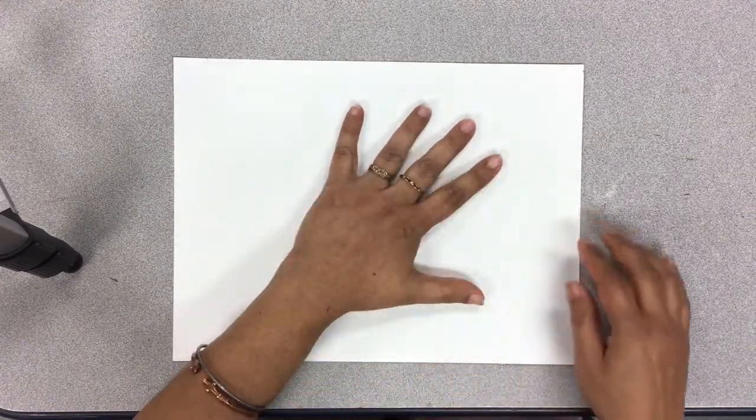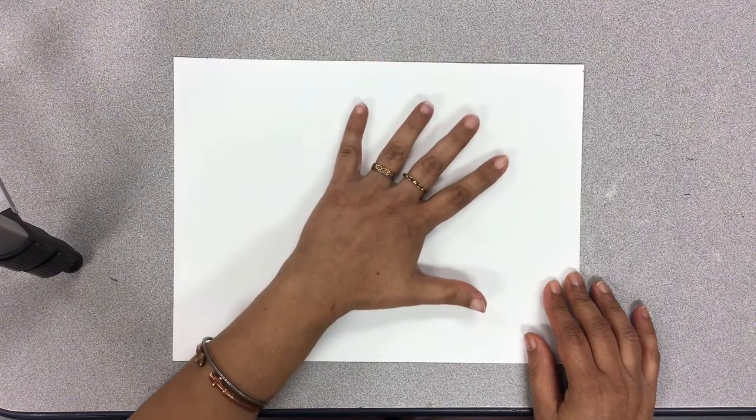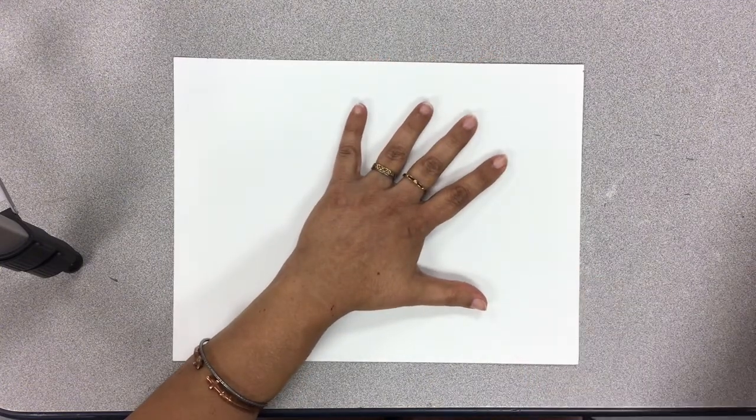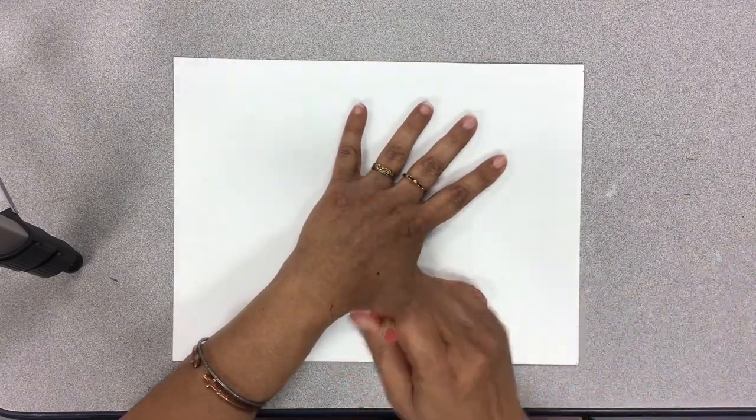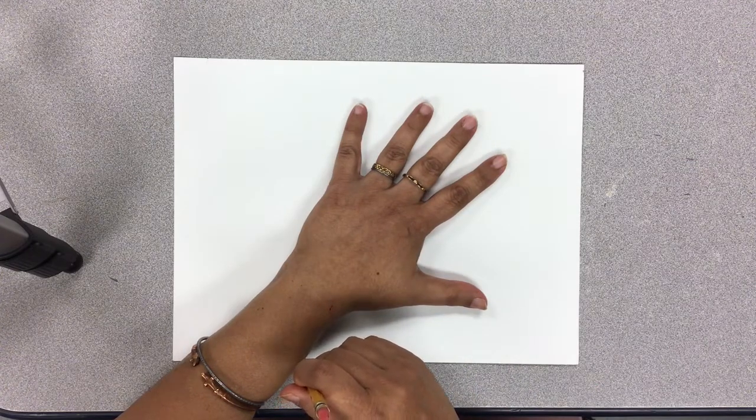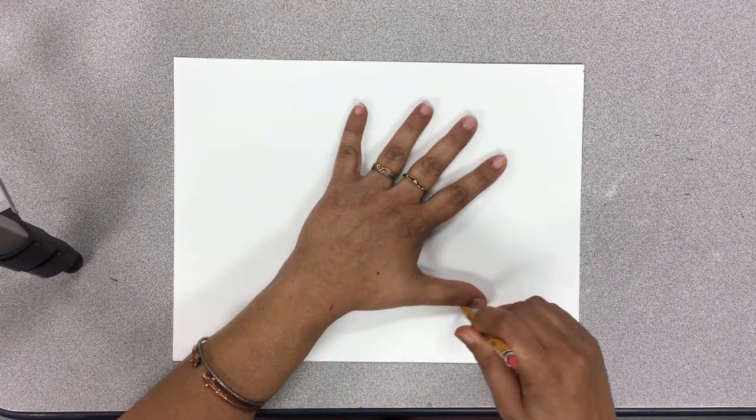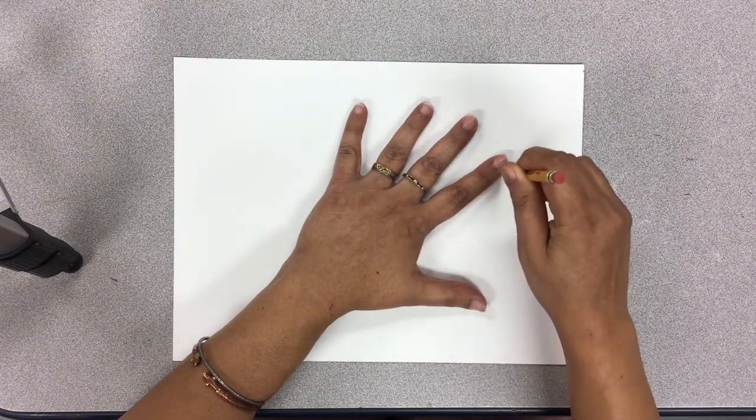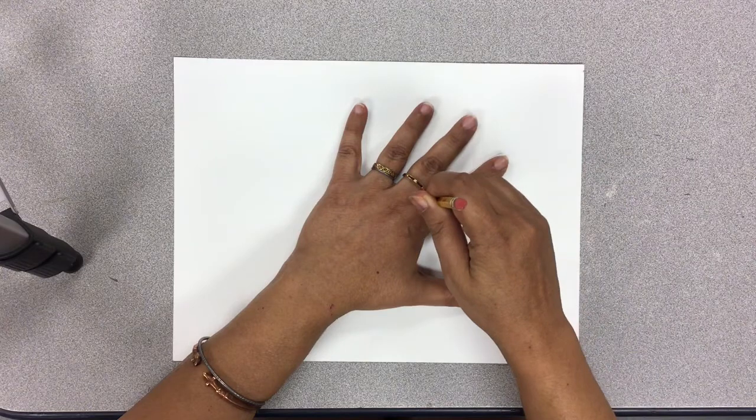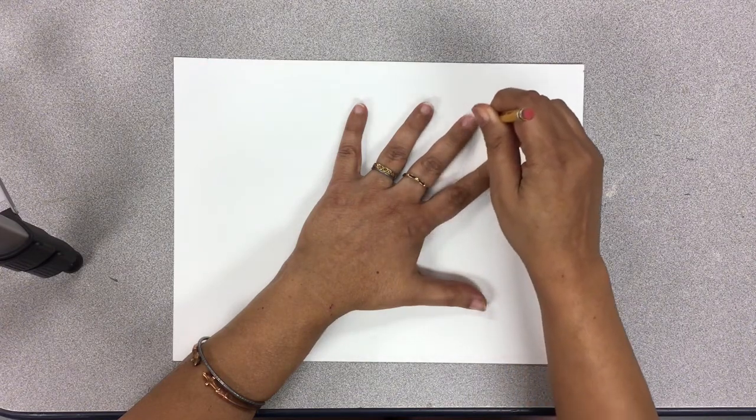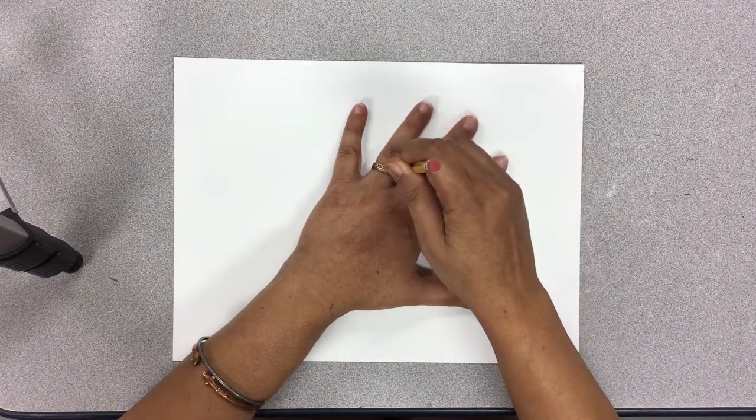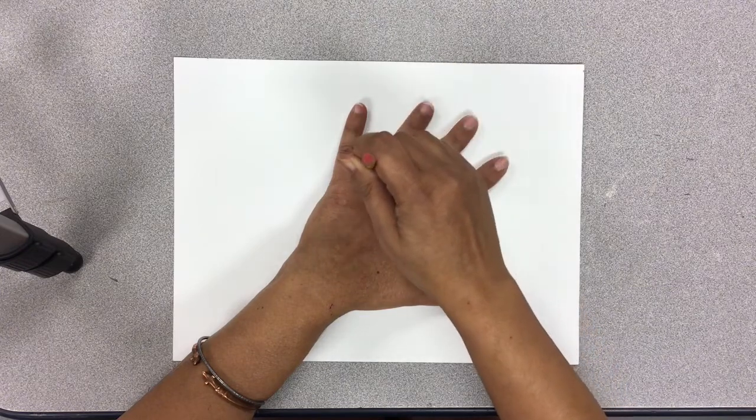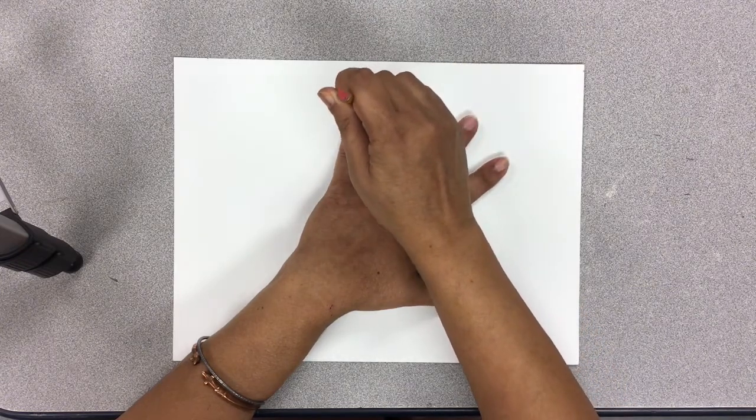Now while tracing your hand, make sure you are holding your pencil absolutely vertical and not at an angle. This is extremely important. You know why? If you hold your pencil at an angle, your hand and fingers will end up looking very skinny.